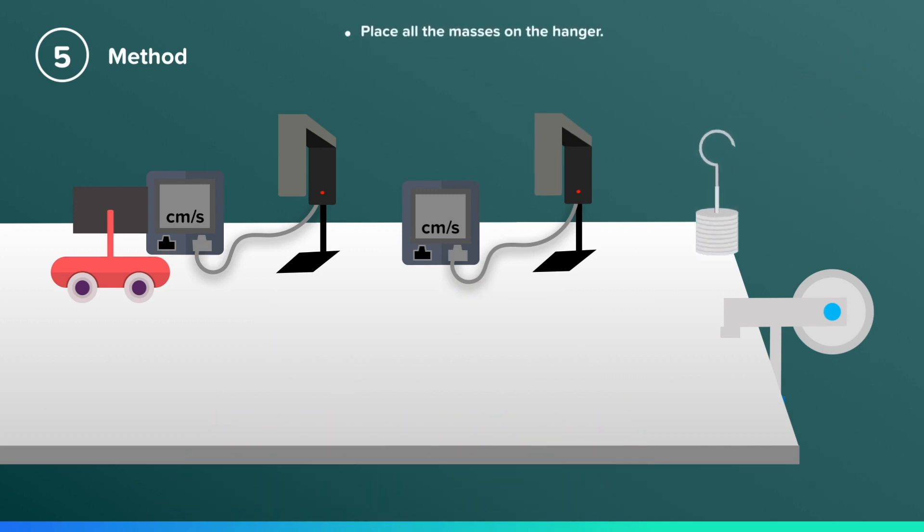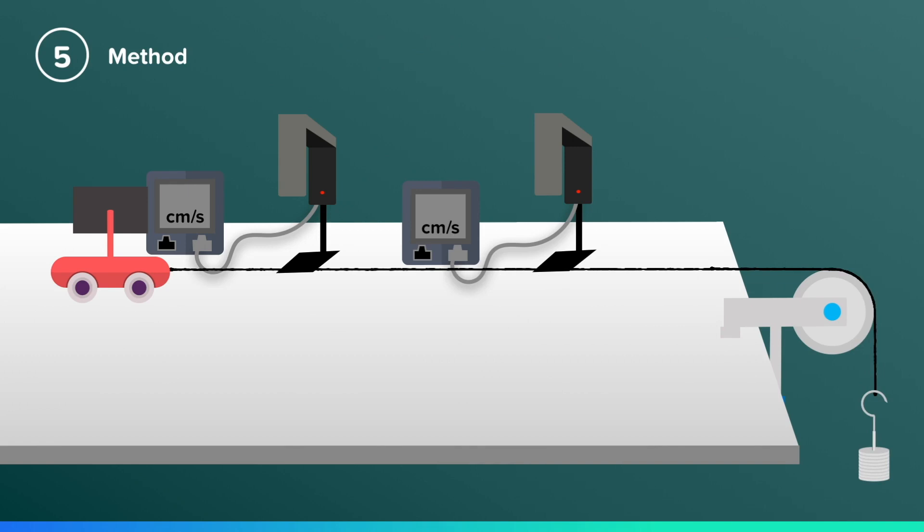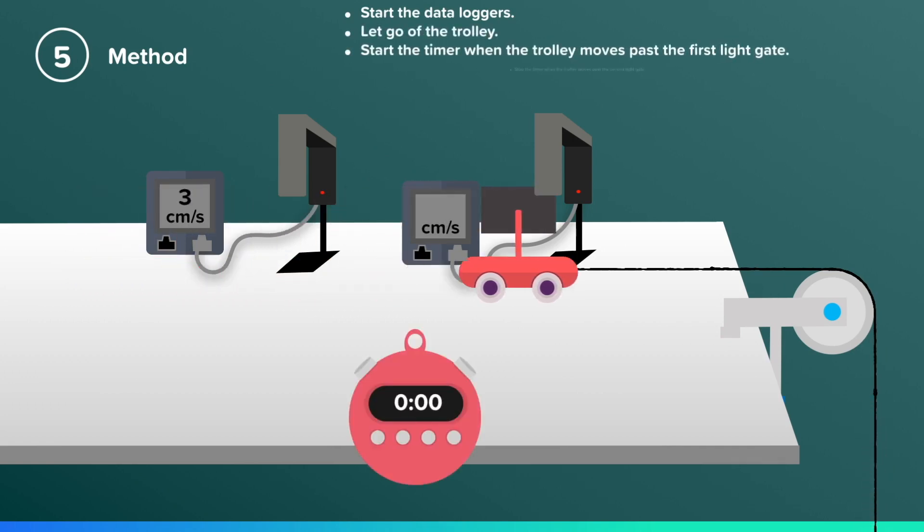Place all your masses on the hanger. Then attach the trolley to the hanger using your string. Make sure that the string is securely placed on the pulley. Start both of your data loggers, and then let go of the trolley. Start the timer when the trolley moves past the first light gate, and then stop the timer when the trolley moves past the second.